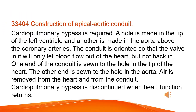Construction of Apical Aortic Conduit: Cardiopulmonary bypass is required. A hole is made in the tip of the left ventricle and another is made in the aorta above the coronary arteries. The conduit is oriented so that the valve in it will only let blood flow out of the heart, but not back in. One end of the conduit is sewn to the hole in the tip of the heart. The other end is sewn to the hole in the aorta. Air is removed from the heart and from the conduit. Cardiopulmonary bypass is discontinued when heart function returns.